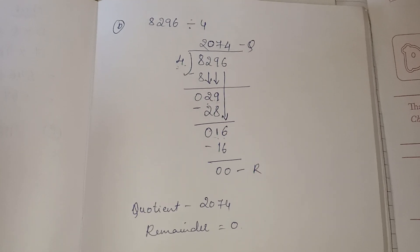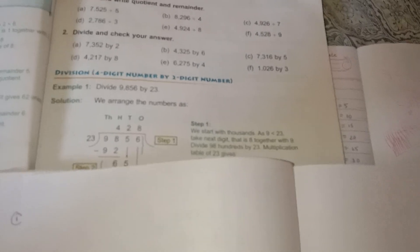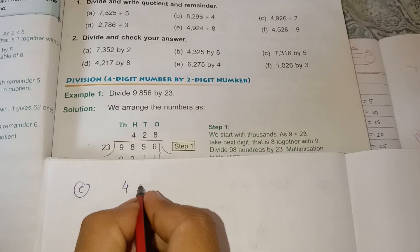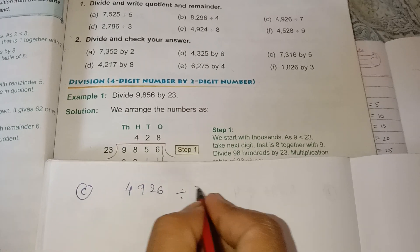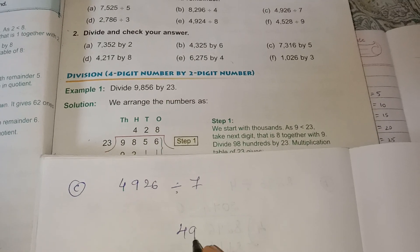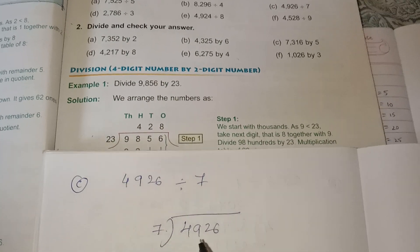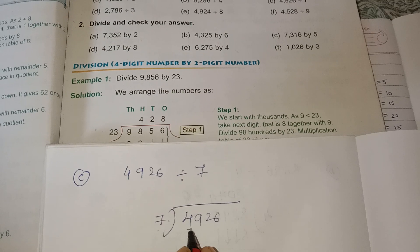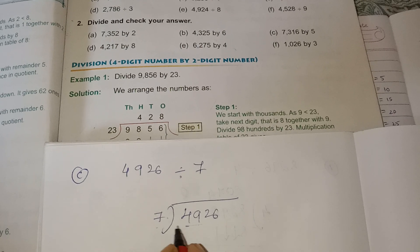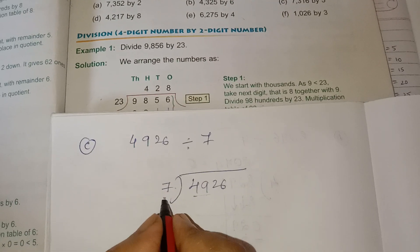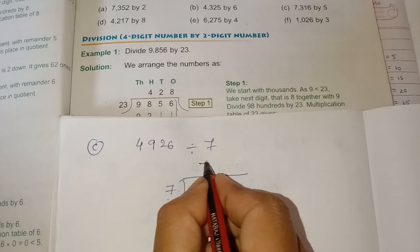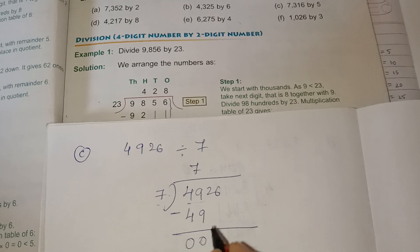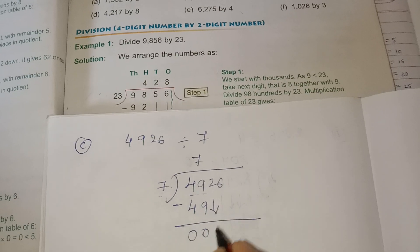Move on to the third one: 4926 divided by 7. The 4 is less than 7, so I have to take 2 digits: 49. Recall the table of 7: 7 sevens are 49. Subtract, then take the next number down.